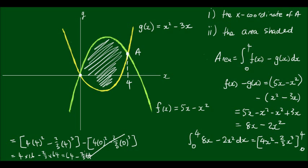So in reality we have 1/3 of 64, which is equal to 21 and 1/3. So the shaded area is equal to 21 and 1/3 units squared.